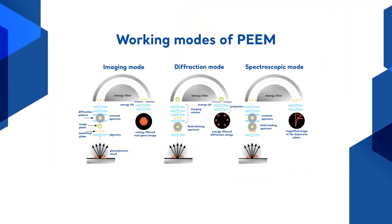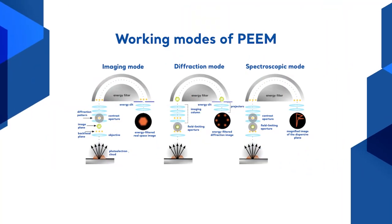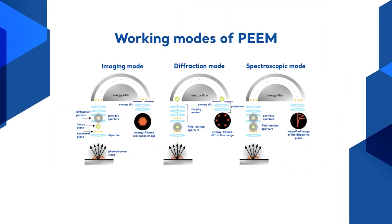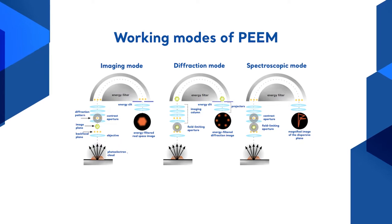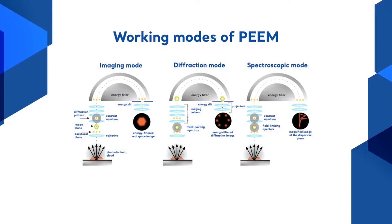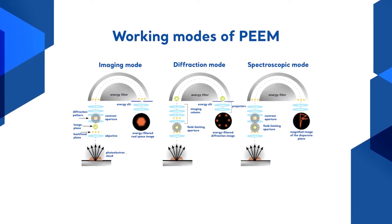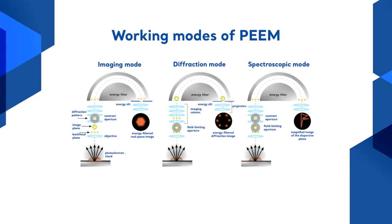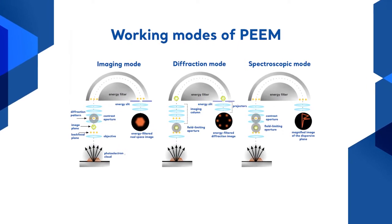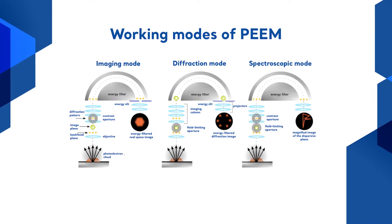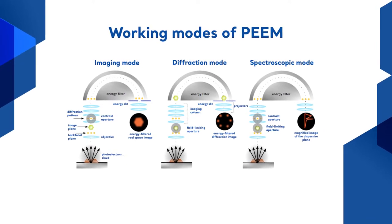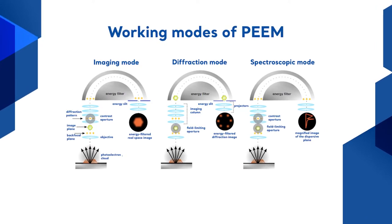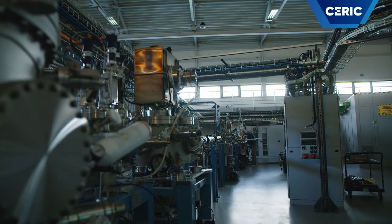The electron optics configuration of the PEEM microscope allows three main operation modes: spectroscopic imaging, spectroscopic diffraction imaging, and microspectroscopy operation.